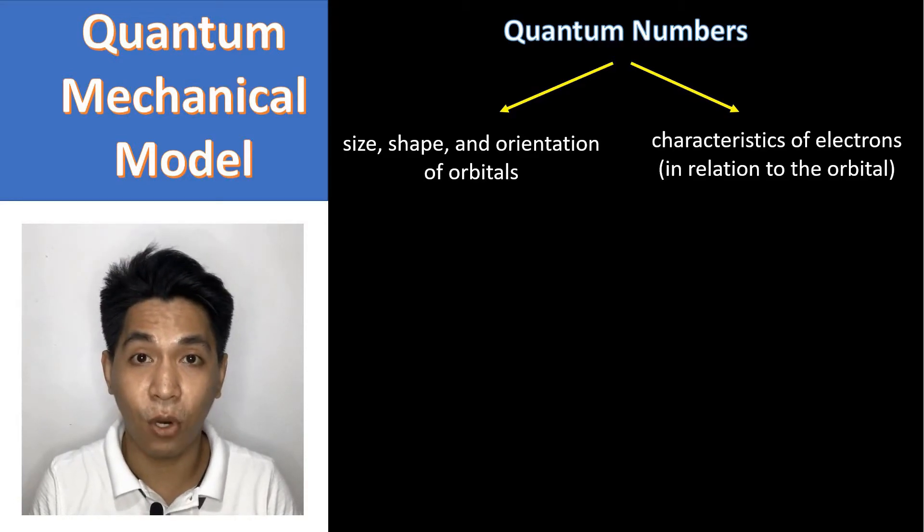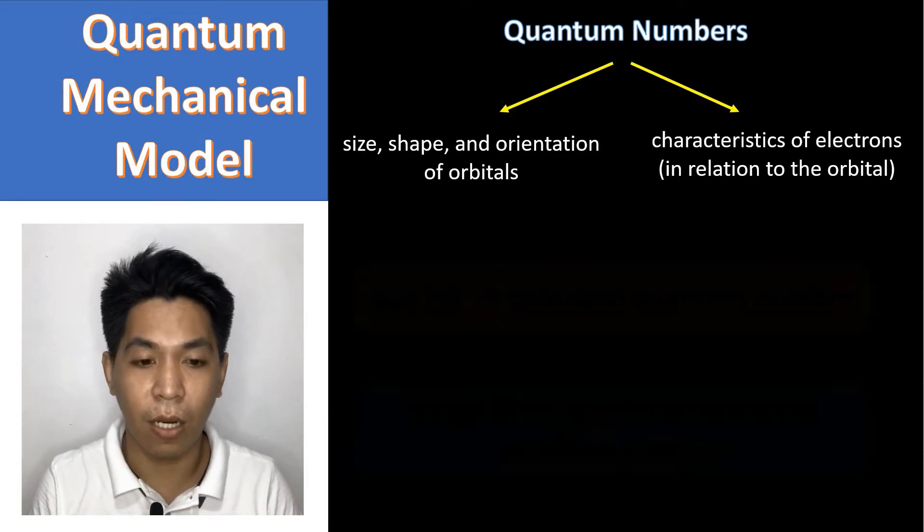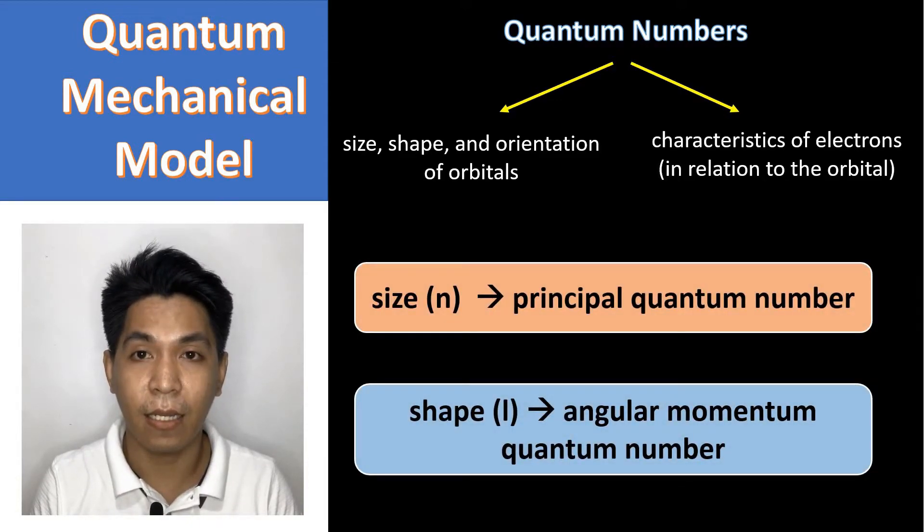We have actually four quantum numbers. But in this video, we will only use two, which are the n, which is the principal quantum number. It tells us the size of the orbital. And the L, which is the angular momentum quantum number, which tells us the shape of the orbital. So the n tells us how big the region can be for finding electrons, while the L tells us the shape of that region.